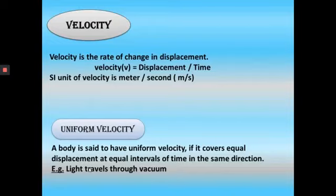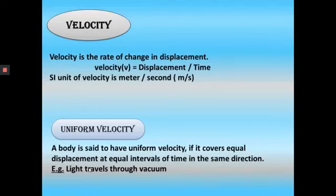Velocity is the rate of change in displacement. Velocity is equal to displacement divided by time. The SI unit of velocity is meter per second. A body is said to have uniform velocity if it covers equal displacement at equal intervals of time in the same direction. Example: light travels through vacuum.